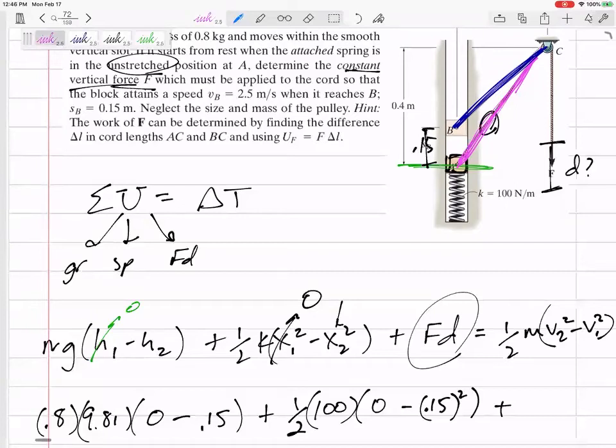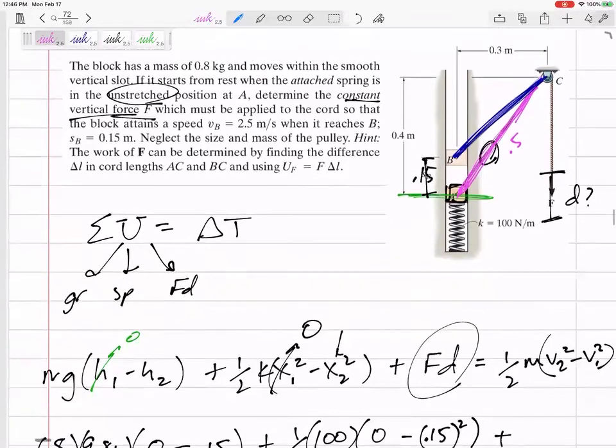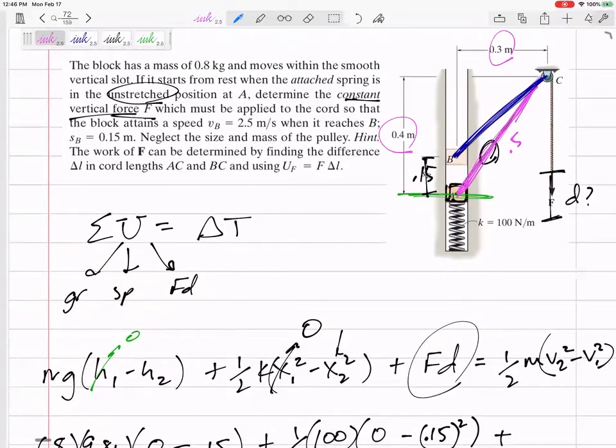So this pink length would be 0.5. We just did 0.4, 0.3, square those, take the square root. And then this blue rope would be 0.3 by 0.25, and it would be 0.3905, 0.3905.